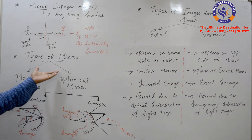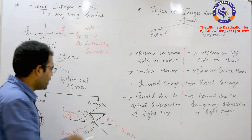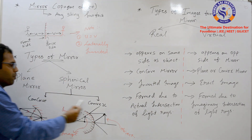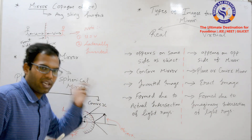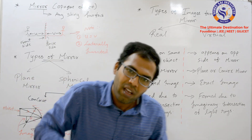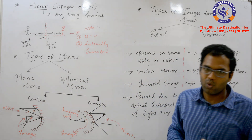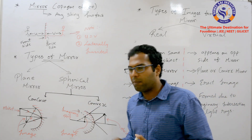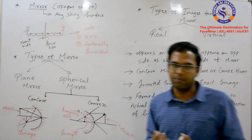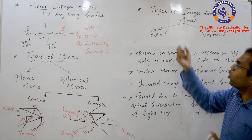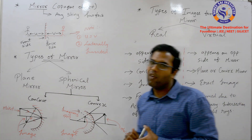The other type is a spherical mirror. In spherical mirrors, there are two types: one is a concave mirror and the other is a convex mirror, which we will study in detail. The image formed can be of two types: one is a real image and the other is a virtual image.